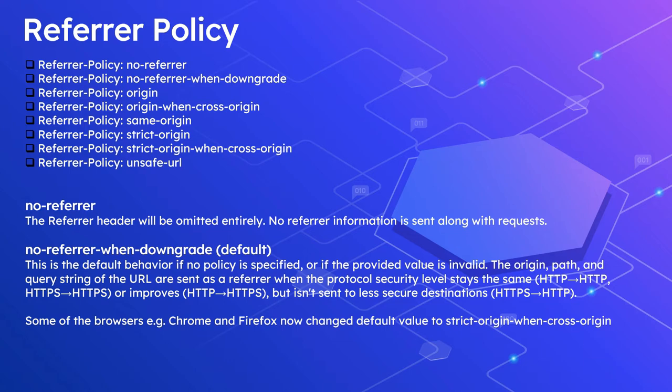With no-referrer-when-downgrade, the origin, path, and query string of the URL are sent as a referrer when the protocol security level stays the same — meaning HTTP to HTTP or HTTPS to HTTPS — or improves, like HTTP to HTTPS. But it will not be sent if the destination is less secure, meaning the source page is HTTPS and it's accessing an HTTP page. Some browsers, such as Chrome and Firefox, now change the default value to strict-origin-when-cross-origin.